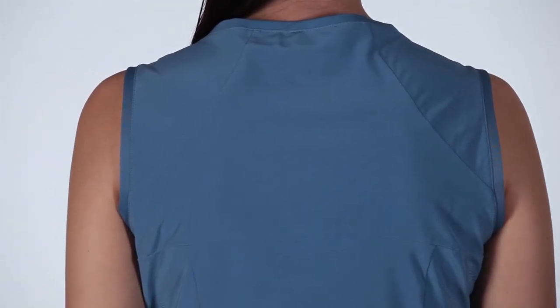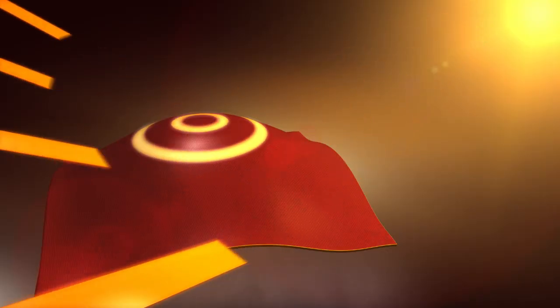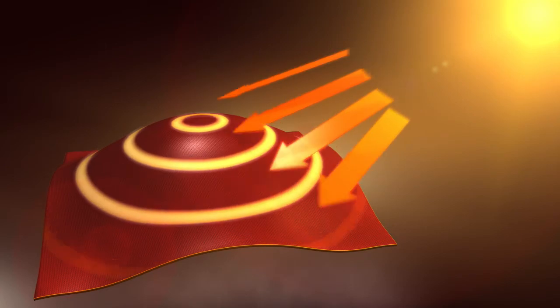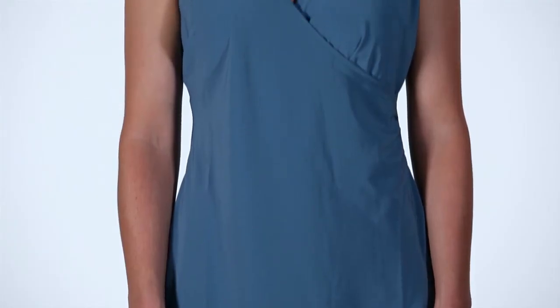OmniShade uses tight weave construction, UV reflectors, and UV absorbing technology to help block damaging UVA and UVB rays from reaching your skin.